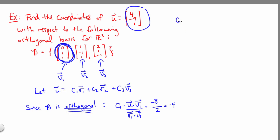We can do something similar to find c2. This time we'll take our vector u dotted with our second basis vector, divided by v2 dotted with itself.